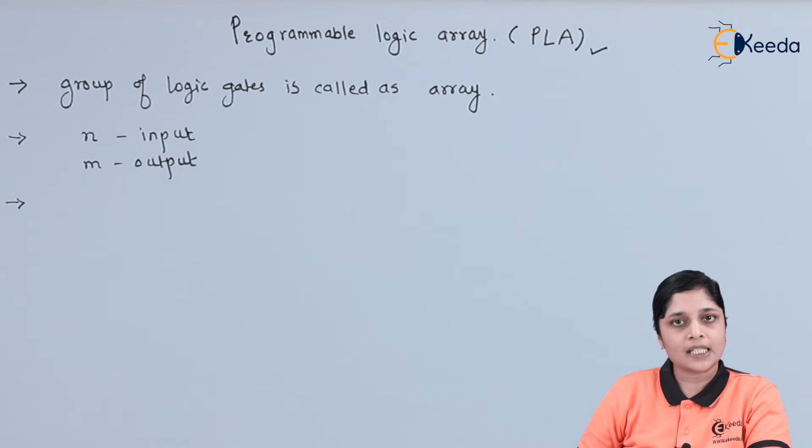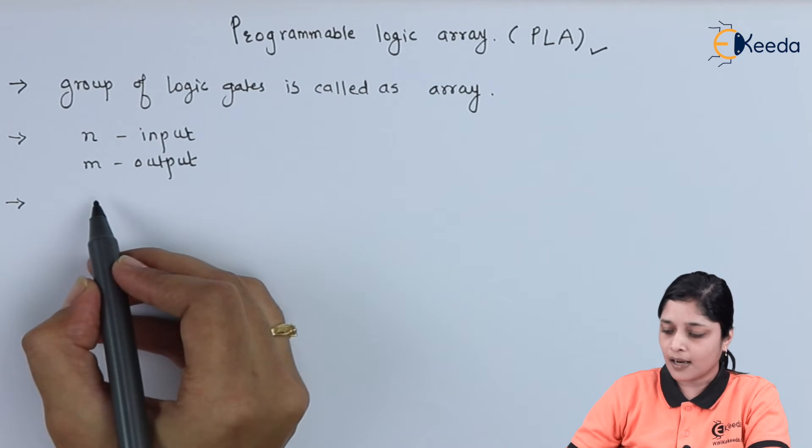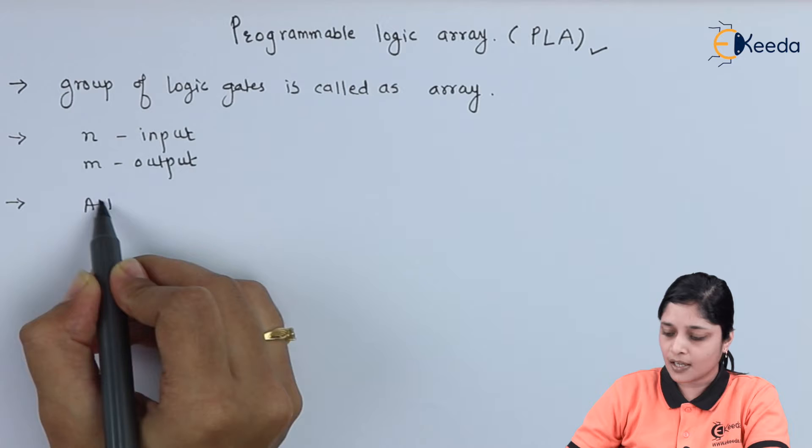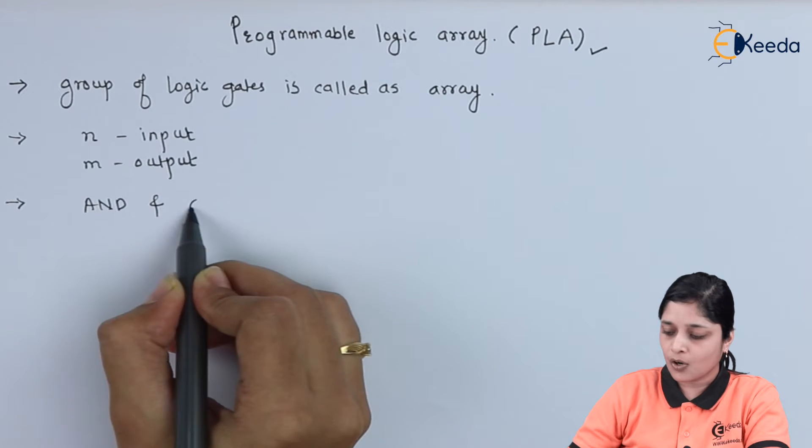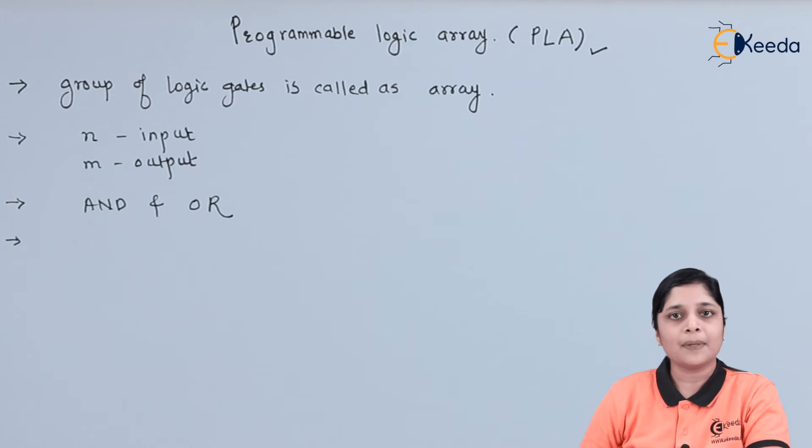The basic logic gates used in PLA are AND gate and OR gate. In the PLA, AND gate is Programmable and OR gate is also Programmable.